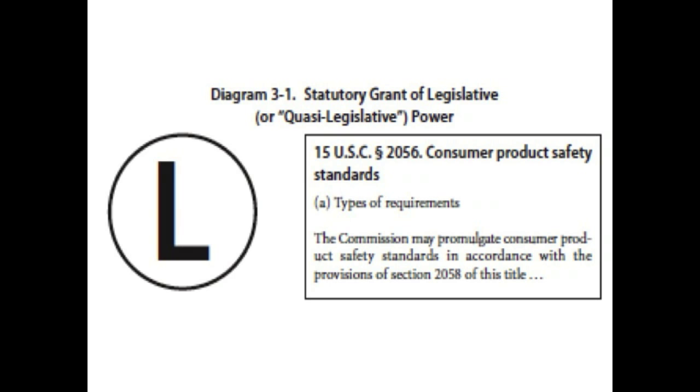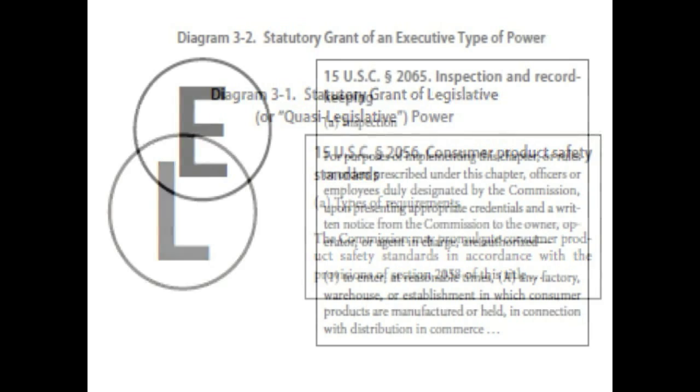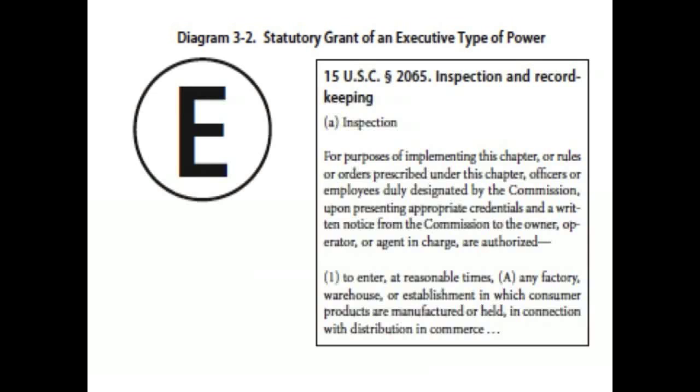Finally, effective graphics need to be engaging — easy and inviting for students to interact with. I encourage students to use the circles representing different types of agency power when reading statutes, to mark provisions granting each type of power. For example, one statutory provision grants quasi-legislative power to the Consumer Product Safety Commission — the power to promulgate consumer product safety standards. Another provision grants the Commission executive power, such as the power to conduct workplace inspections.